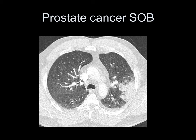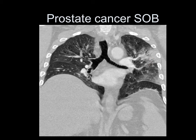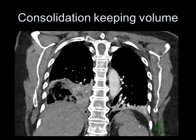Here's a patient with prostate cancer who's short of breath. There's an irregular margin to the abnormality, and there is volume preservation in this area of opacification — this is consolidation. Nowadays we're able to reconstruct our images as we wish, and you can get a better impression of whether there's volume loss by doing so. We have standard reconstructions in the coronal and sagittal planes, so there's no excuse not to look. We can see the volume is preserved and there are nice air bronchograms.